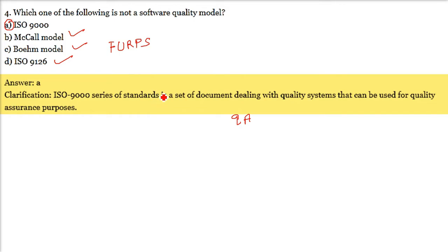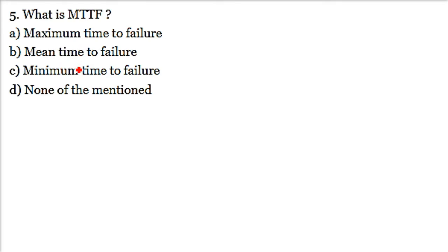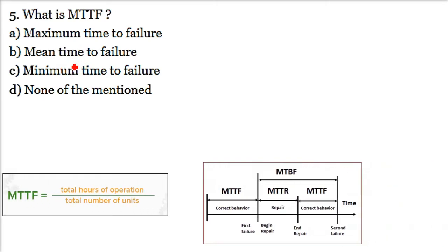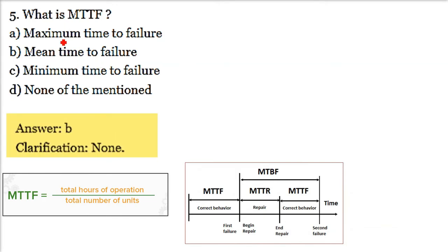What is MTTF? MTTF stands for mean time to failure. It is calculated as total number of hours divided by total number of units. MTTF is the actual time the product is working correctly - the time between two failures. It is a reliability and maintenance metric.